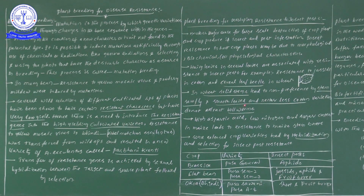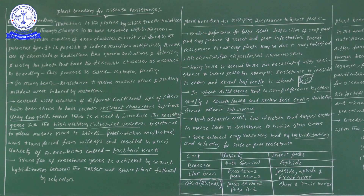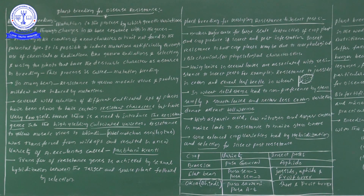One more characteristic: smooth-leaved and nectar-less cotton varieties do not attract bollworms. If any insect comes onto a smooth leaf, because of its smooth nature the insect cannot sit on it. When nectar is very less, insects cannot be attracted — they cannot move towards that cotton plant.